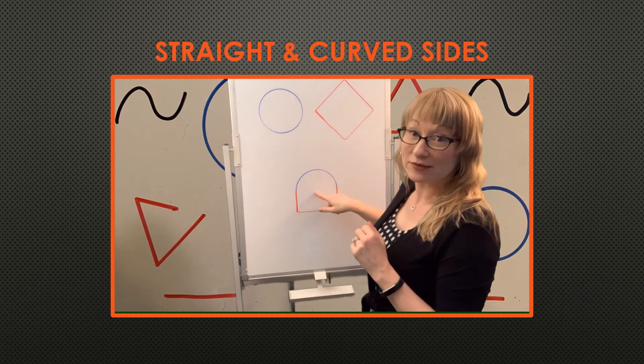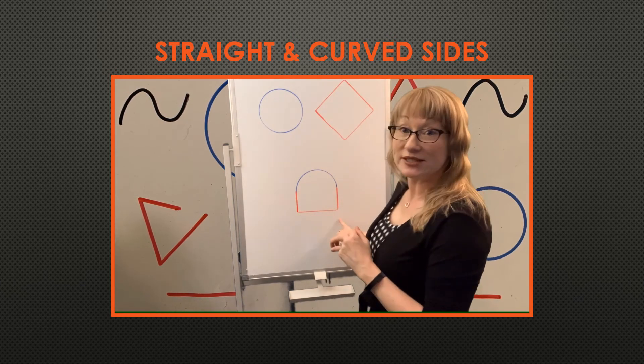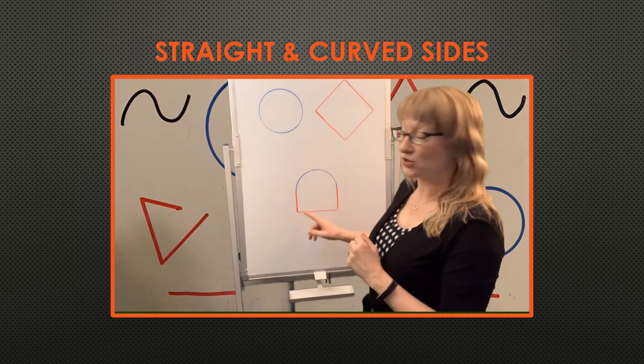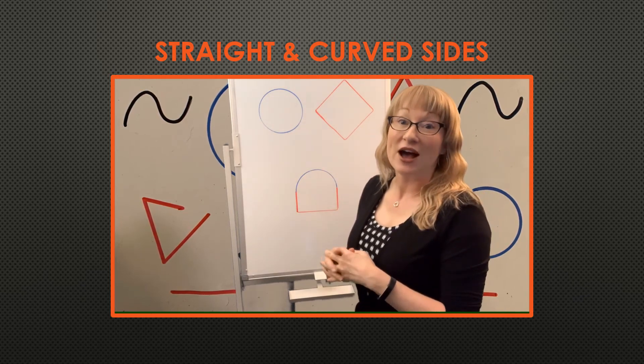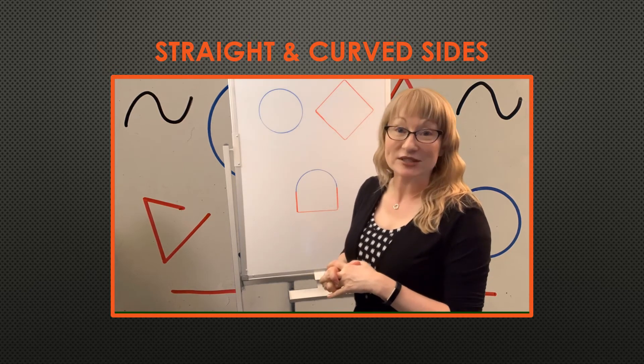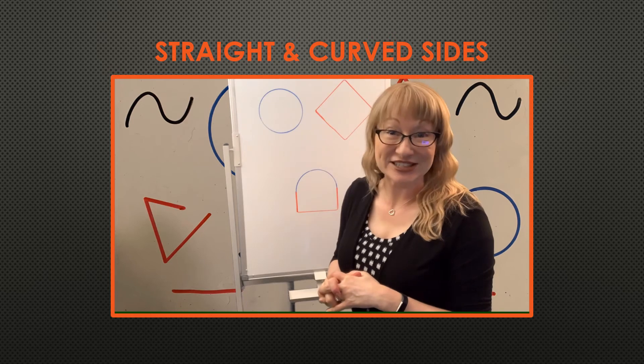And then you have this shape. It's not a square or a circle, but it's got parts that are straight. All the red lines are straight, and the blue line is curved. I've got some activities coming up for you. See if you can identify the curved and straight lines in the shapes. See you soon.